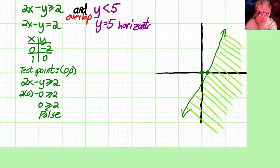Y equals 5, which is the equation of a horizontal line. And strictly less than gives us a dashed line, so I graph the dashed line y equals 5.